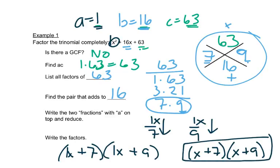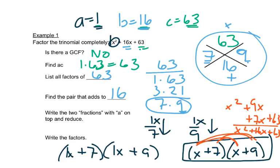Now you could FOIL this to check it. If we did x times x, we would get x squared. X times 9 is 9x. 7 times x is 7x. And then 7 times 9 is 63. We add like terms, we get x squared plus 16x plus 63, which is what we started with, and that's how we know we've got it right.